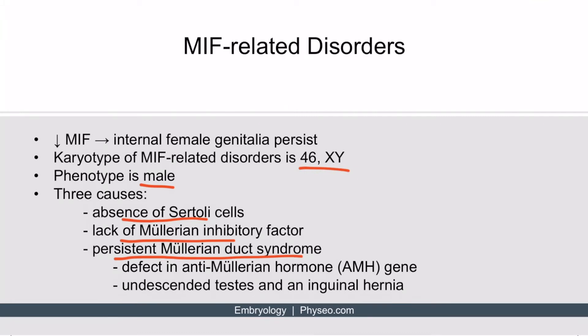A high-yield disorder to focus on is persistent Müllerian duct syndrome. This is due to a defect in the anti-Müllerian hormone gene, and predictably results in persistence of female internal genitalia. However, it also commonly presents with undescended testes and an inguinal hernia. So if you see this triad — undescended testes, inguinal hernia, and presence of internal female genitalia — you're dealing with persistent Müllerian duct syndrome.